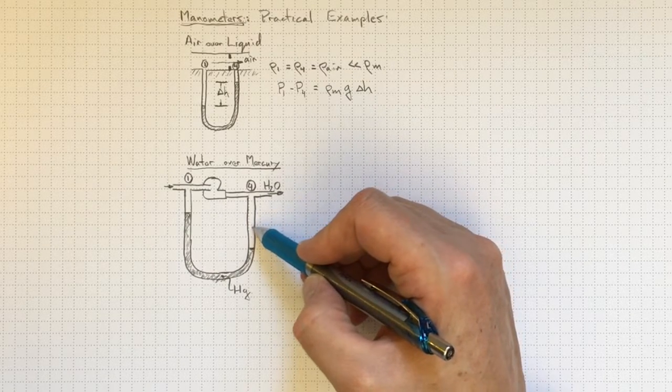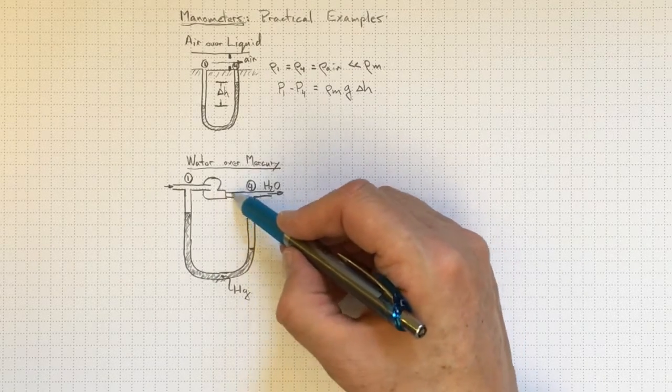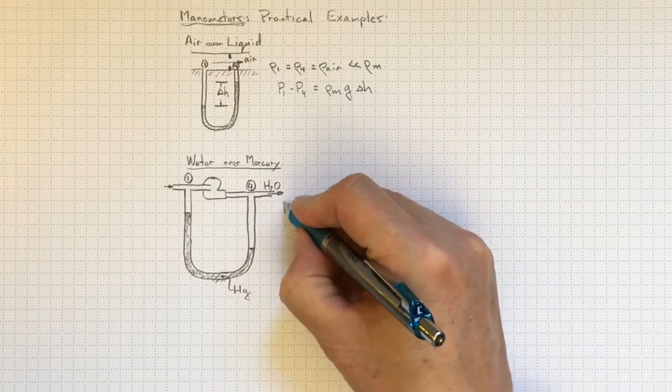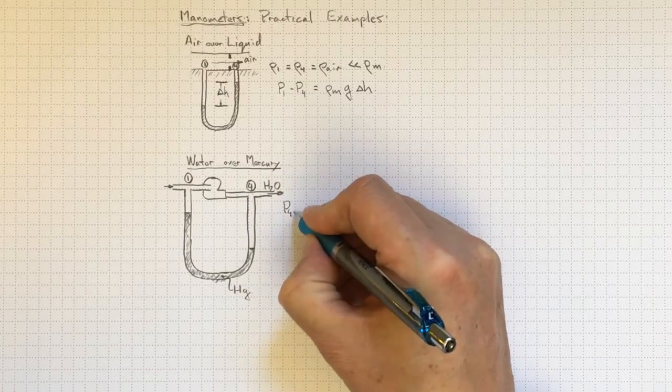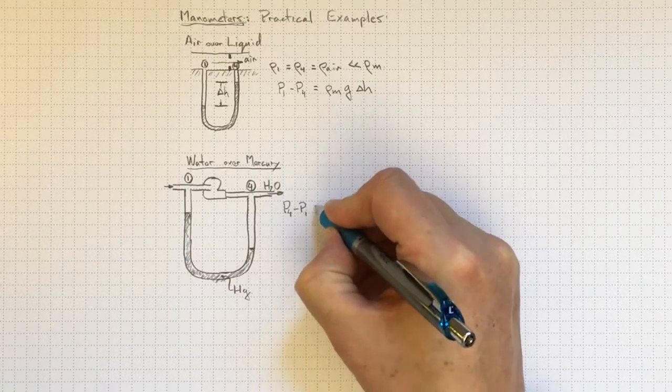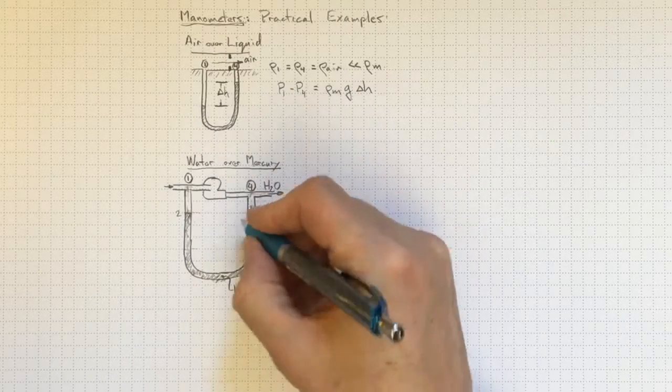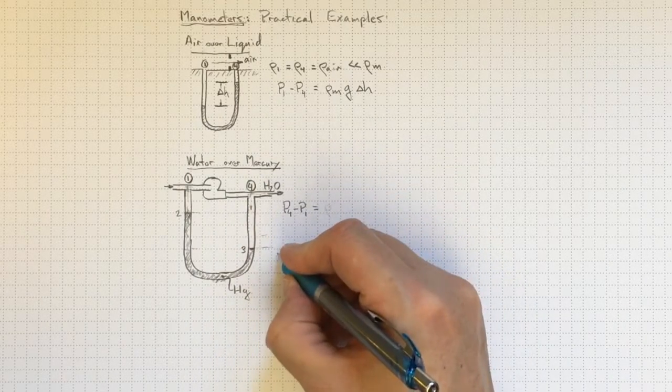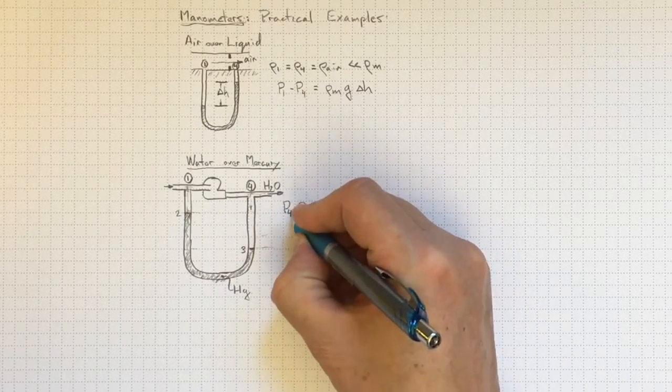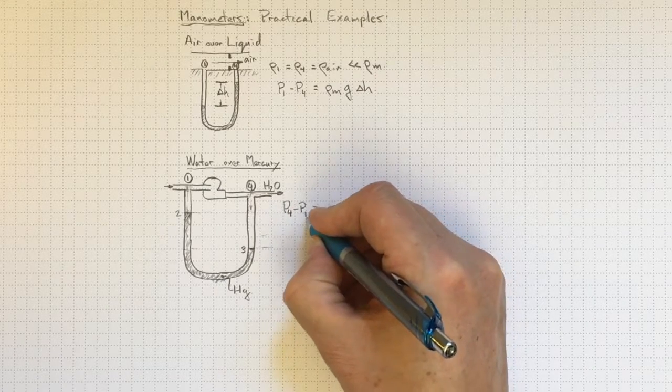So in this instance, we've got a higher pressure at the outlet of the pump, and we've got P4 minus P1. Well, let's walk it around from location 1 to 2 to 3 to 4, just as we did before, in order to find out what the difference in pressure is between the pressure at 4 and the pressure at 1.